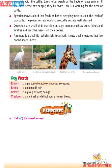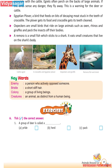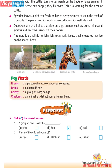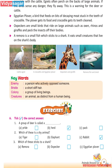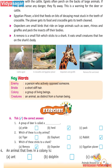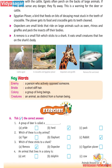Exercises. Check the correct answer: A group of deer is called a herd. A shy animal is the rabbit. The animal that sticks to a shark is the remora. An animal that lives in a colony is an ant.